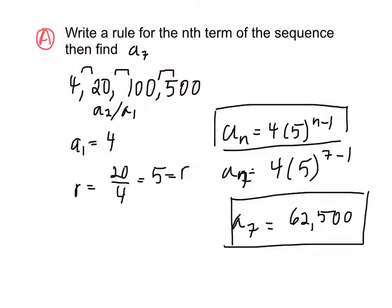So typically, even if our problem had not asked us to find a rule for the nth term, but simply asked us to find a sub 7, it's still faster to find this first, our general formula, and then find a specific term, the 7th term.